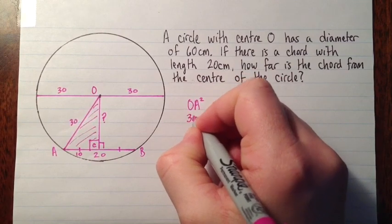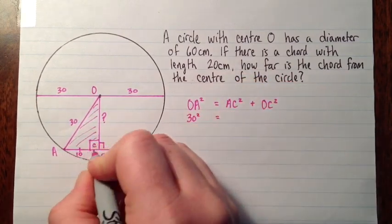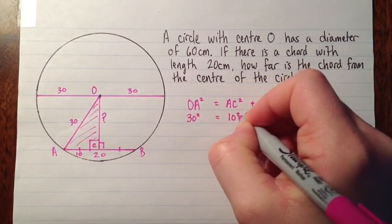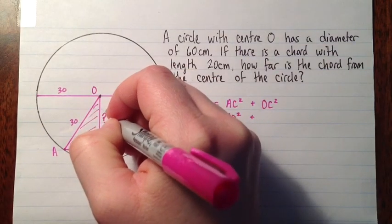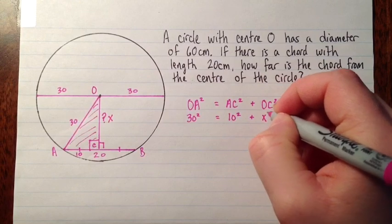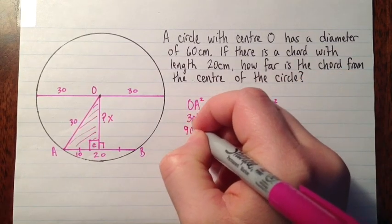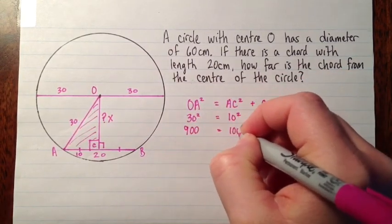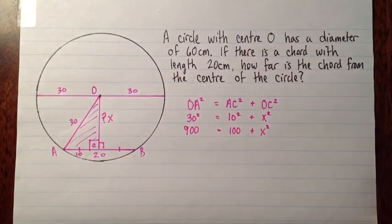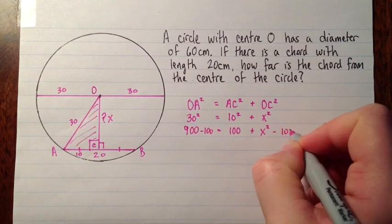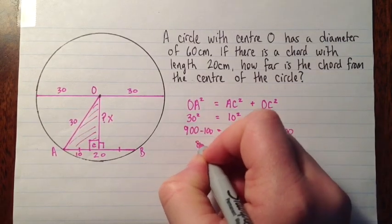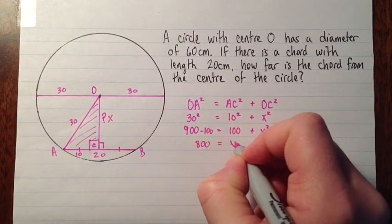So 30 squared equals 10 squared plus, let's call that X, X squared. So we have 900 equals 100 plus X squared. And if we subtract 100 from both sides, we get 800 equals X squared.